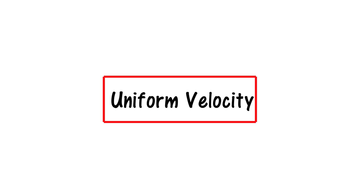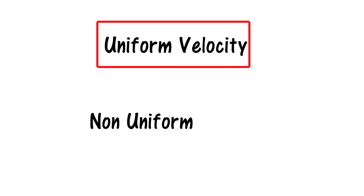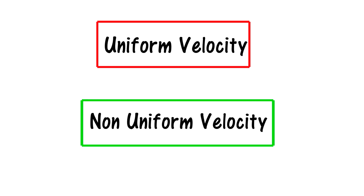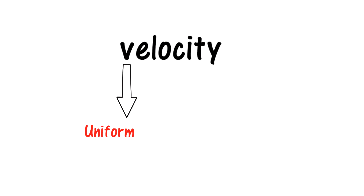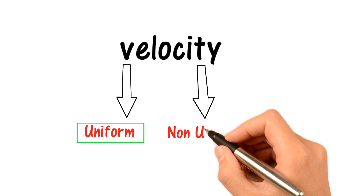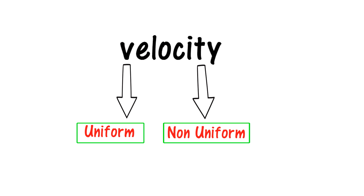What is uniform velocity and what is non-uniform velocity? As we know, speed in a specific direction gives us velocity. Velocity may be uniform or non-uniform.